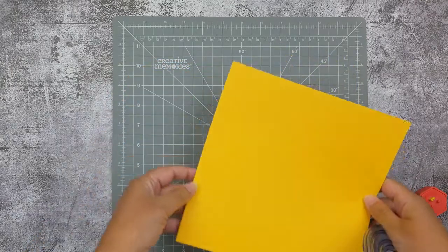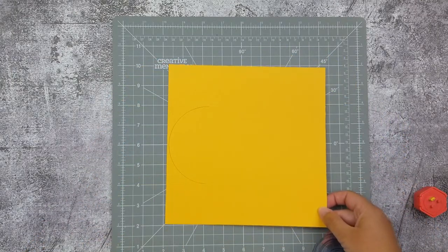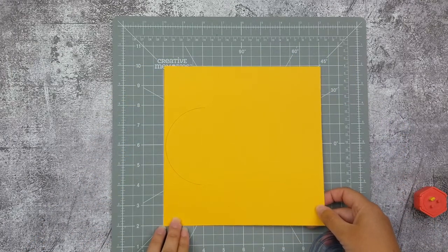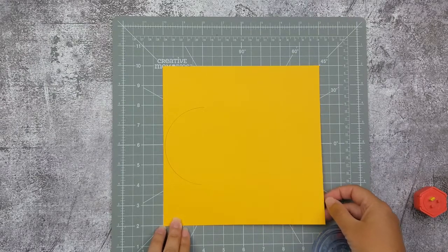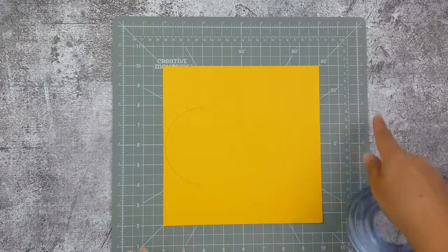Now we're just going to give our paper a quarter turn. We're going to line it up again in the center of our mat and we're going to repeat this process on all four sides.